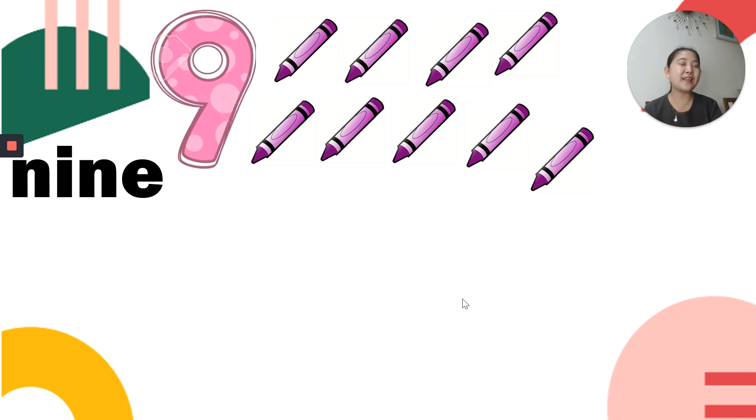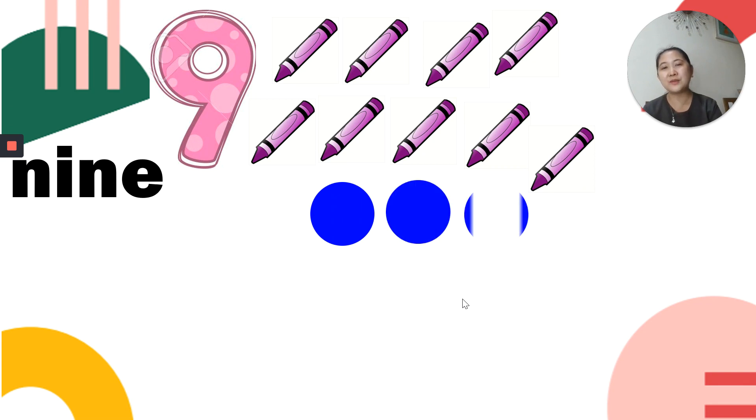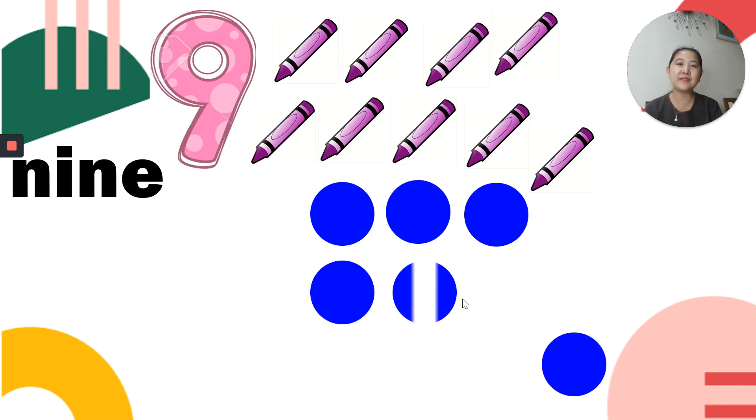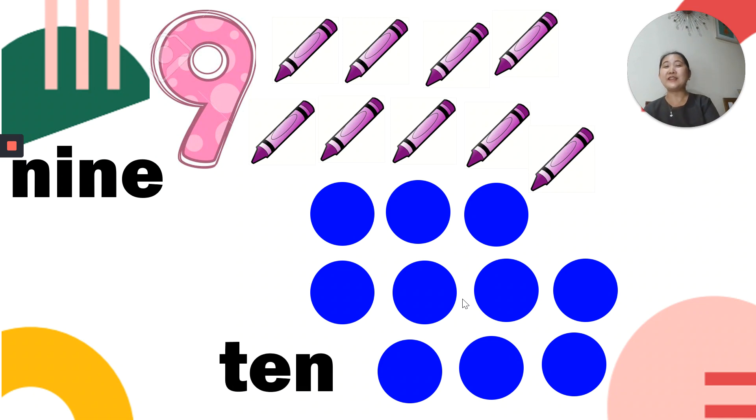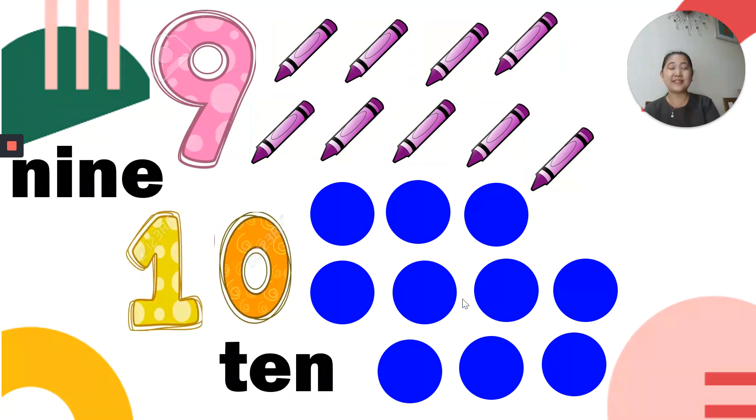And of course, after 9. What do you think? Yes! Let's count the blue circles. 1, 2, 3, 4, 5, 6, 7, 8, 9, 10. That's right. Good job. It's number 10. So, you are already very good at counting and reading numbers in symbols and in words.